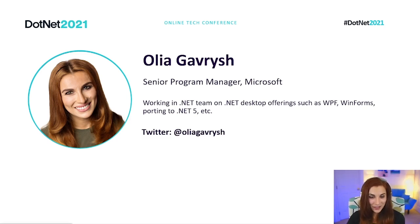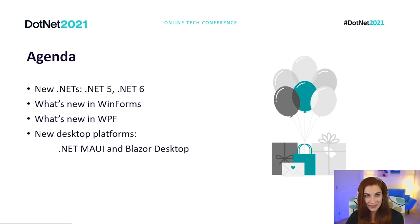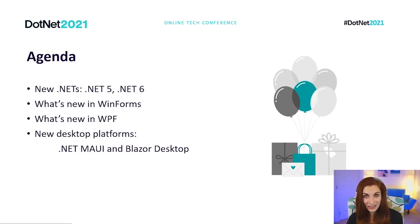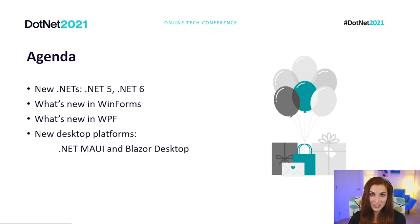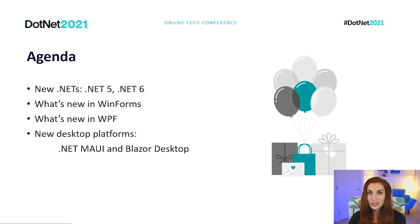Today we're going to talk about news in the desktop world. First we will cover new .NETs — .NET 5 and .NET 6. Then I'll talk about new features available in WinForms and WPF. And in the end, I'll briefly share what are new offerings in the desktop world, such as a cross-platform solution called .NET MAUI, and a hybrid web desktop platform called Blazor Desktop.